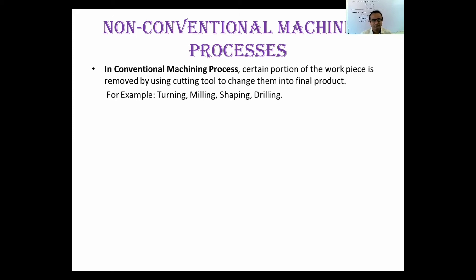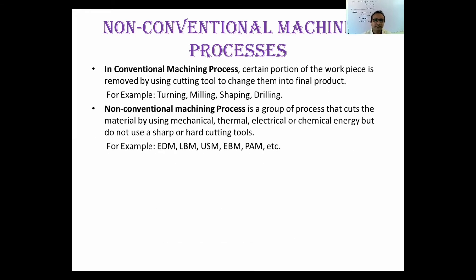Examples of conventional machining include turning, milling, shaping, and drilling — these are all traditional processes. Non-conventional, or non-traditional, processes include EDM, LBM, USM, EBM, and PAM.